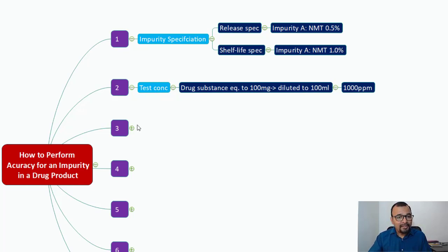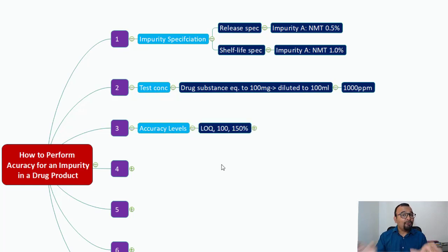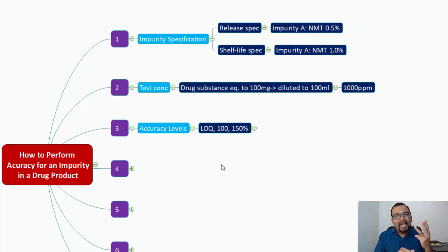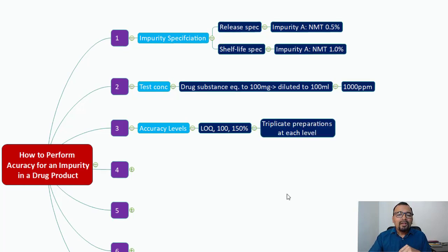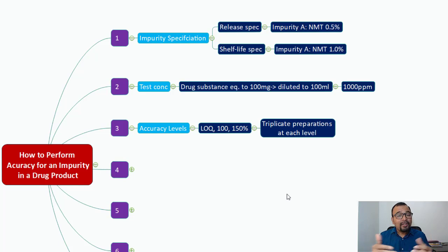The third important point is we need to understand what accuracy levels we are going to prepare. As per ICH guideline Q2(R1), we need a minimum of three accuracy levels — one can be LOQ, 100%, and 150%. At each level you need to prepare the accuracy solution in triplicate, so altogether you will have nine determinations for the accuracy study.